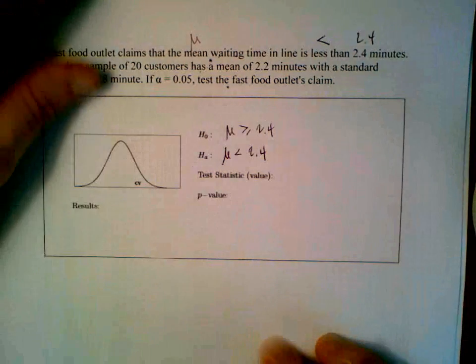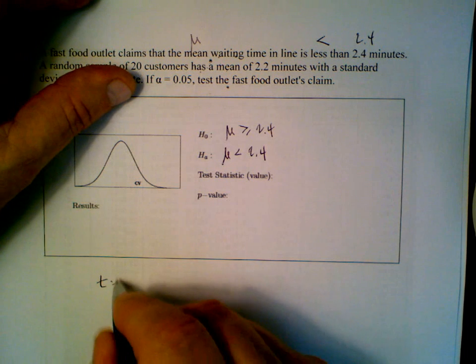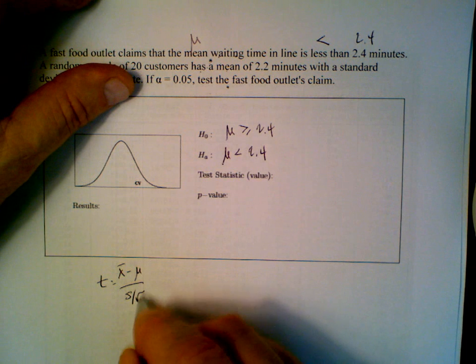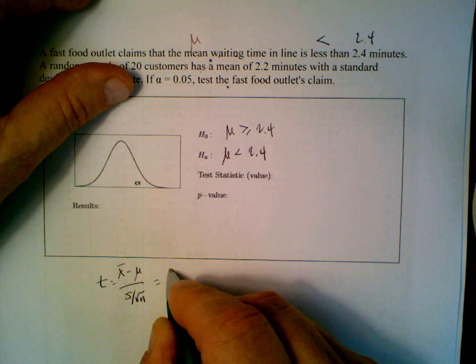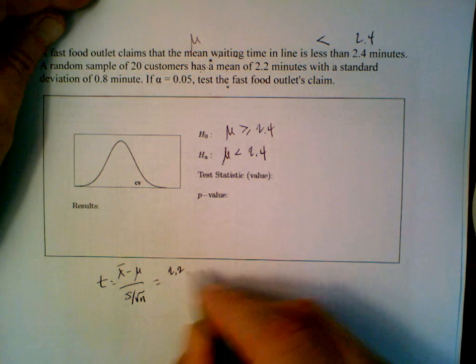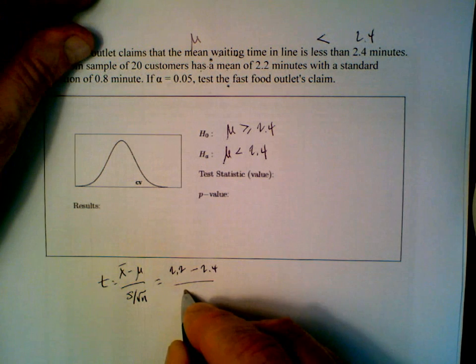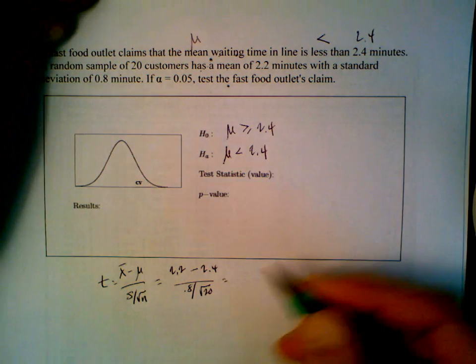Test statistic. T is equal to x bar minus mu divided by s over the square root of n. In this case we have x bar is 2.2 minutes versus 2.4. S is 0.8 and there were 20 in the sample.